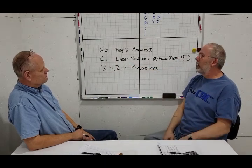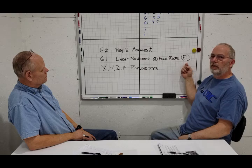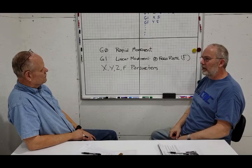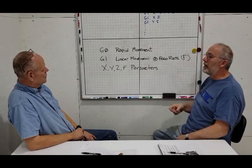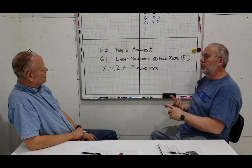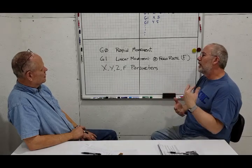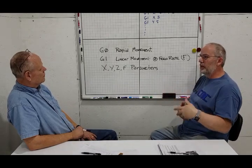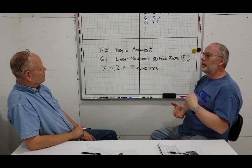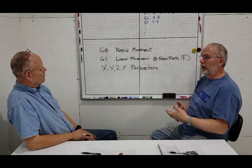The next one is a G-1. Same exact thing, linear move, except for it has a feed rate. So it has the F word in it, right? And the F is going to define it based on your units. Remember G-20 or G-21. So if it's in G-20, it's going to be inches per minute. And if it's in millimeters, it's going to be millimeters per minute.